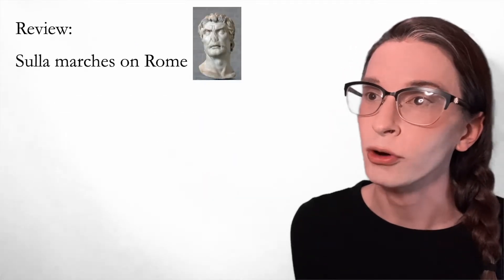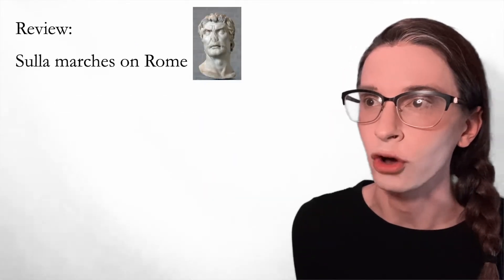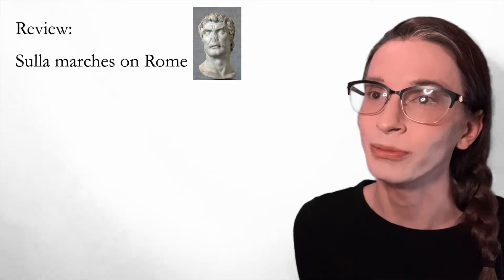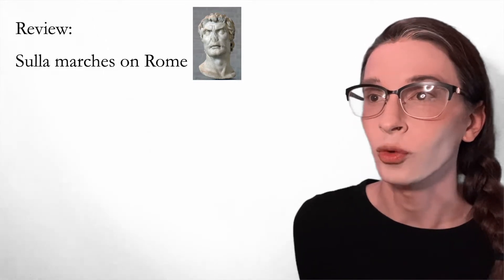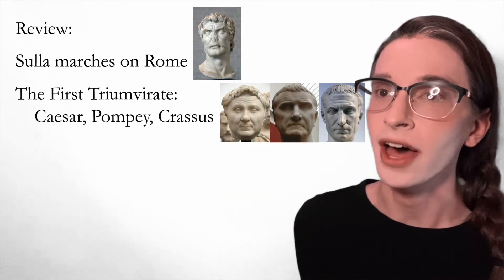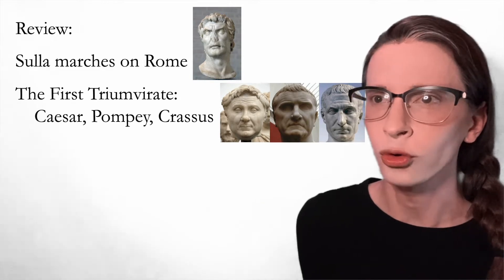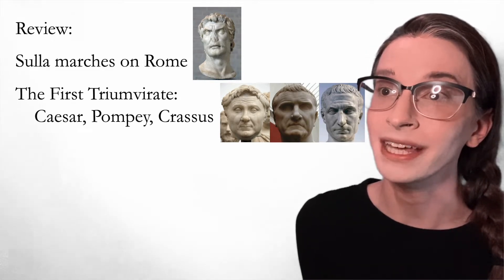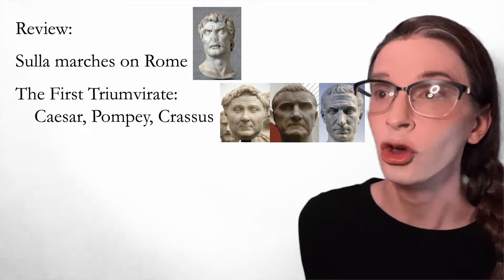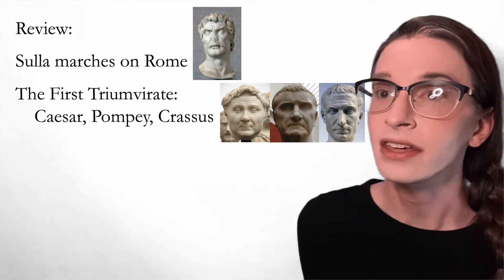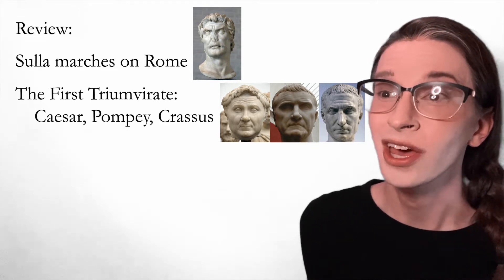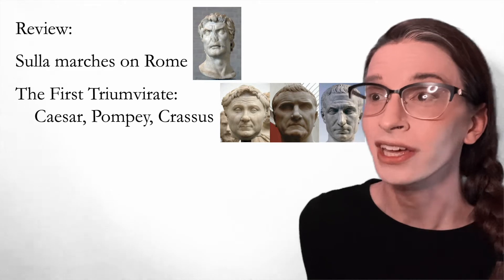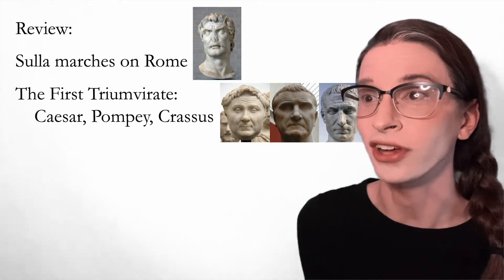To review: a generation prior, Sulla marched his personal army on Rome, showing that a warlord can gain permanent dictatorial power. Caesar, an enterprising young warlord in the making, forges an alliance with two older, more powerful warlords, Pompey and Crassus, which is called the Triumvirate. These three rule Rome together for a few harmonious years, but a partnership based on power is doomed to fall to ambition.